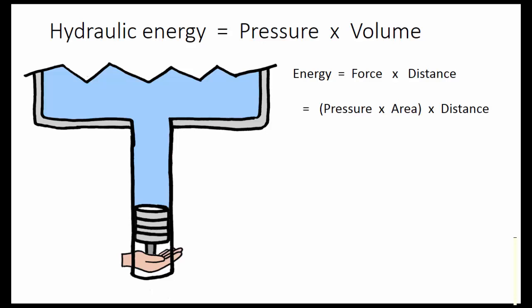What is the force? It's the pressure of the water multiplied by the area of the top of this piston. Now I can rearrange these parentheses. Pressure times area times distance. And what is the area times distance? It is the volume of water displaced. The area times this distance is the volume.